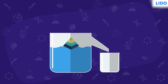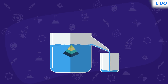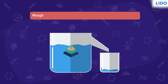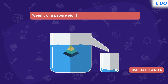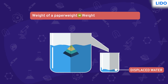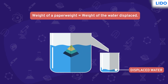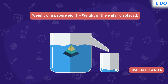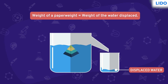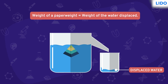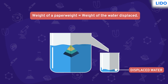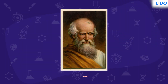What about the paperweight? The weight of the water displaced by the paperweight is equal to the weight of it. Hence, the body floats just below the surface of the water. So the next time you see some object sinking or floating, you know the logic behind it — and you can thank Mr. Archimedes for it!